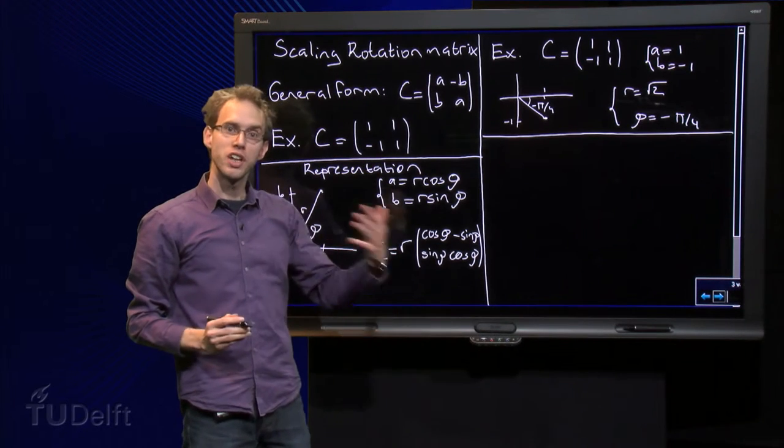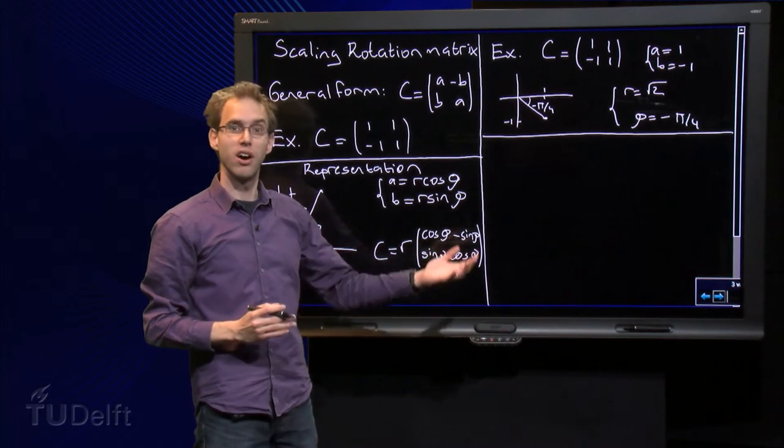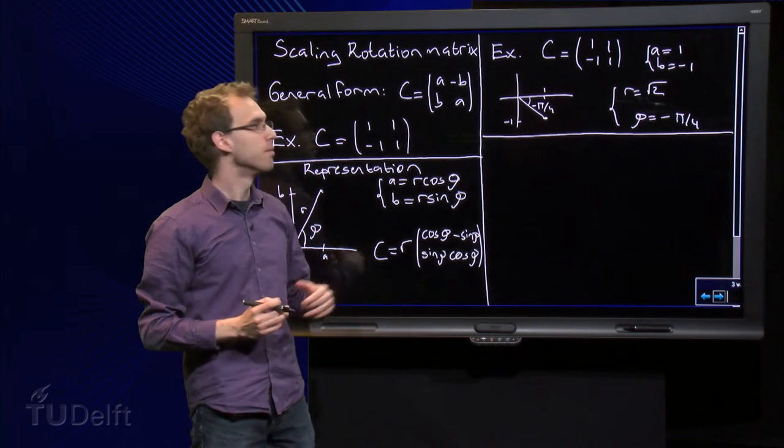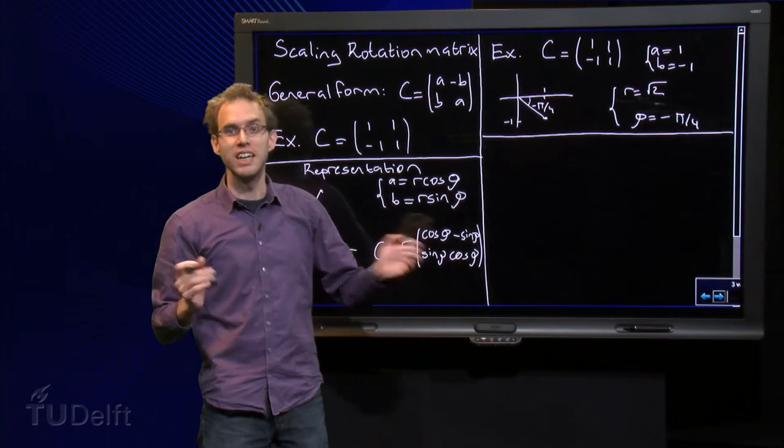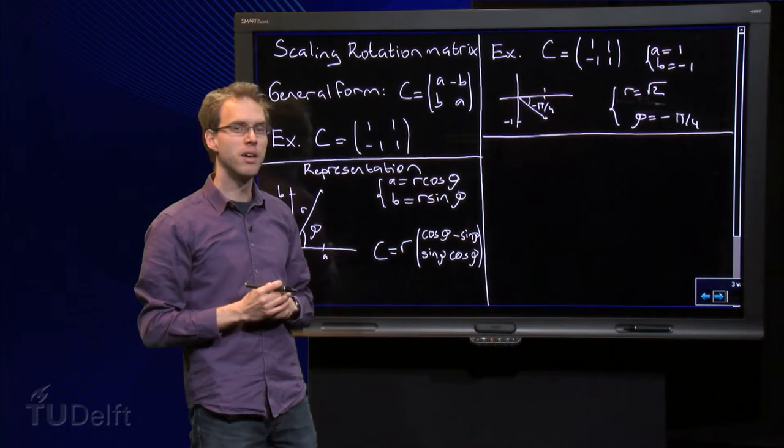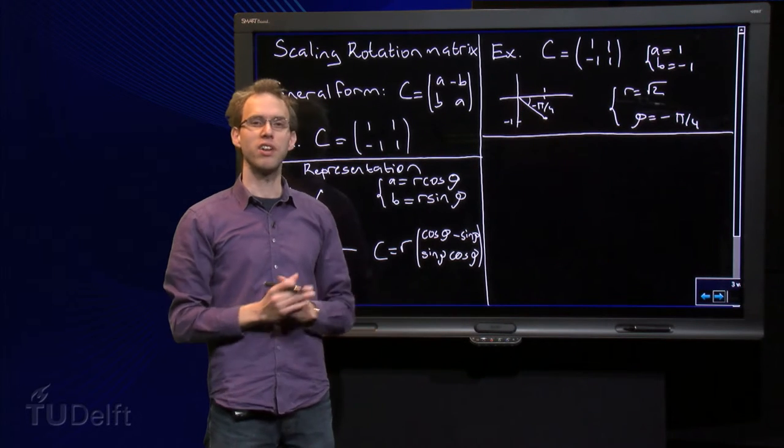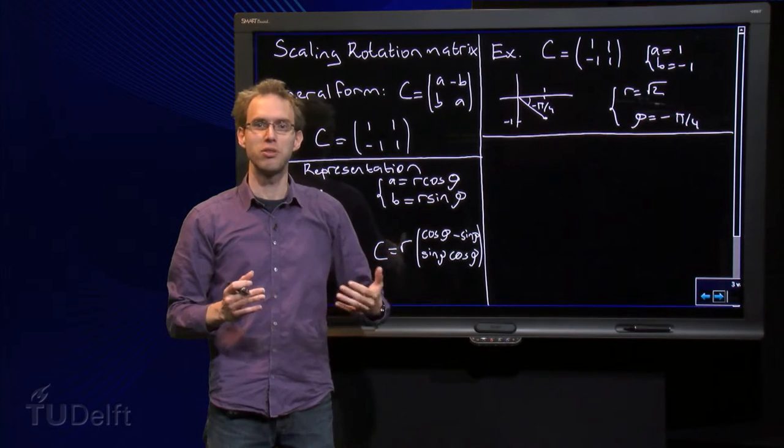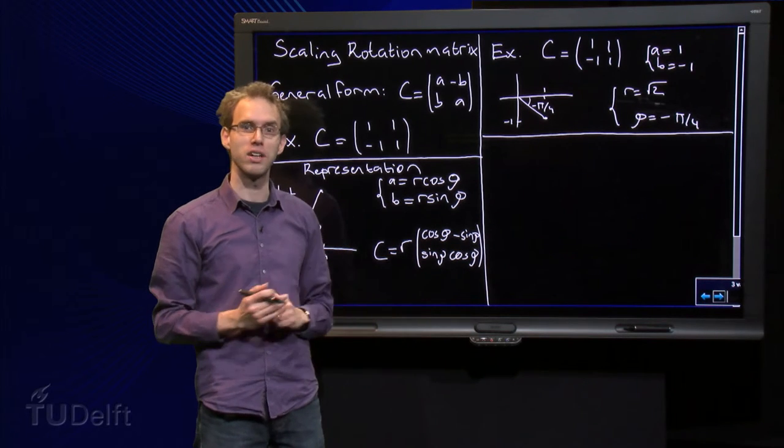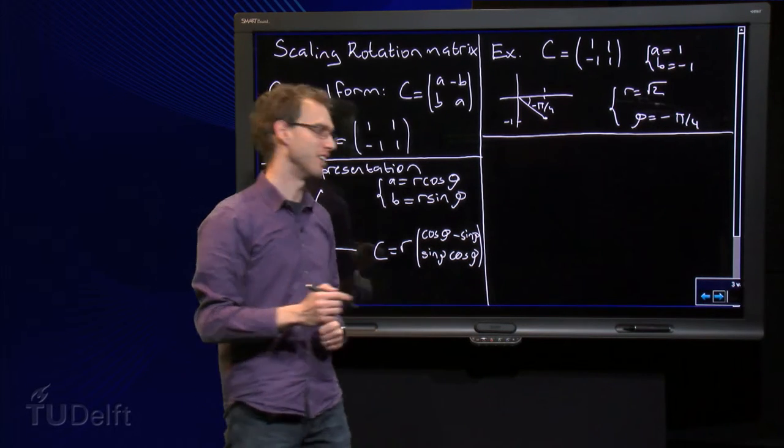So if you have a scaling rotation matrix C, you can find the R and the phi immediately by plotting the matrix in a plane. But we started out with eigenvalues. What does this have to do with eigenvalues? What does this have to do with complex eigenvalues? Well, let's see.